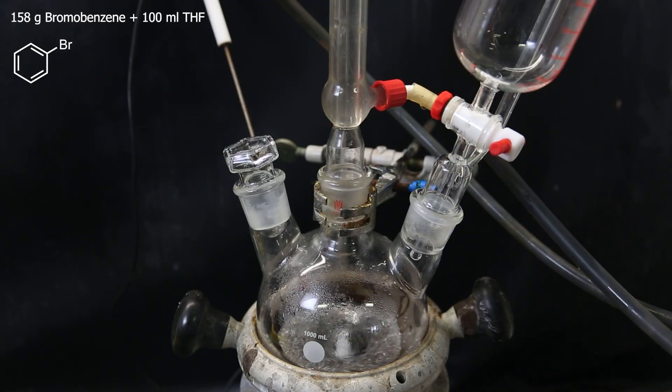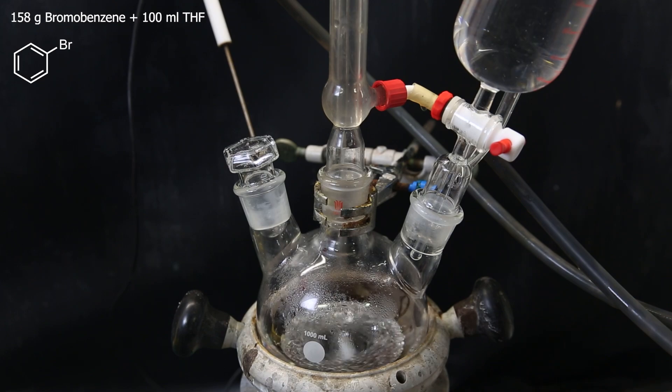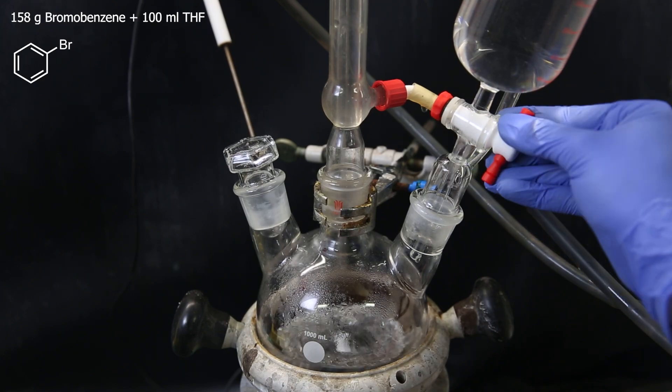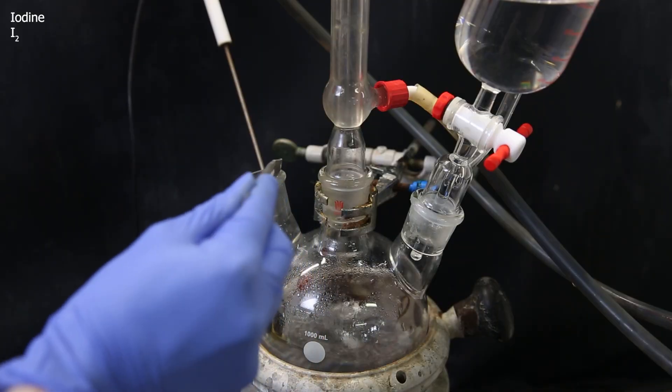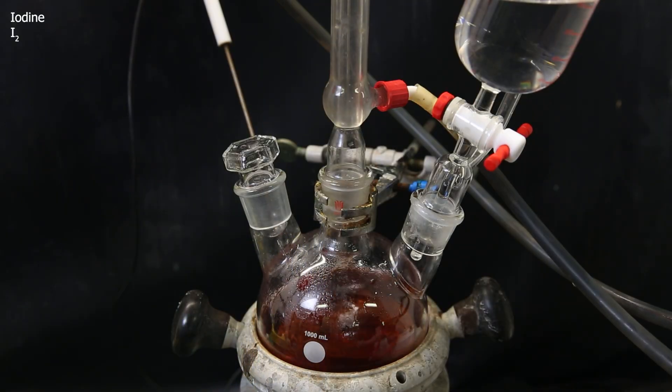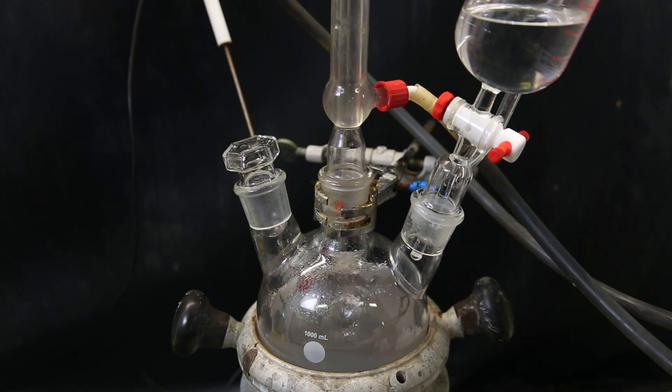Into the dropping funnel, I add 158 grams of the reagent bromobenzene, that I diluted in about 100 mls of THF. I add a portion of it to the flask, and also a small ball of iodine, which will help remove the oxide layer on the magnesium. When the color of the iodine has disappeared, the reaction seems to start, and become darker from the formation of the phenylmagnesium bromide.